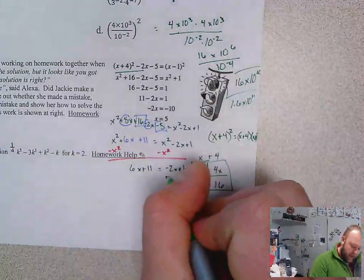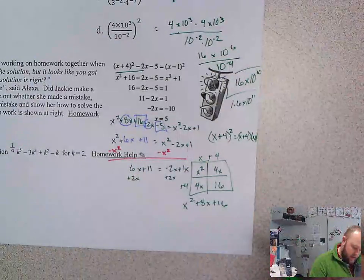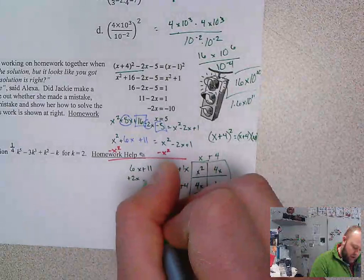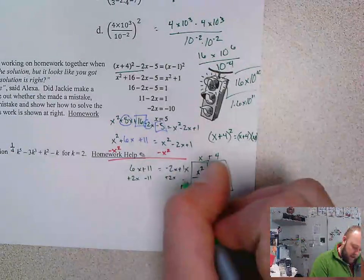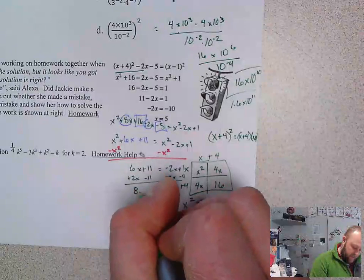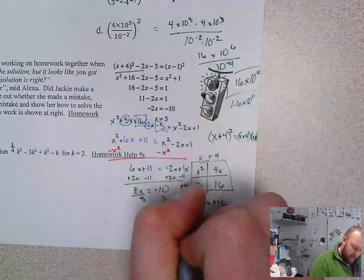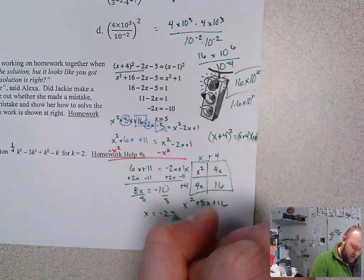I'm going to add 2x. Add 2x. And then I'm going to subtract 11. Subtract 11. And I get 8x equals negative 10 divided by 8 divided by 8. X equals negative 2.25.